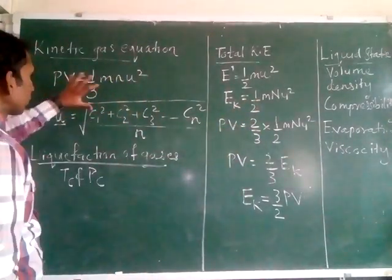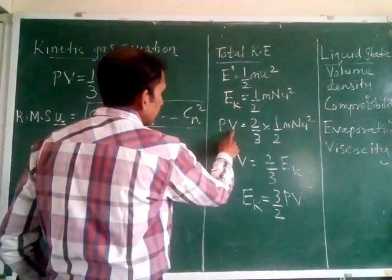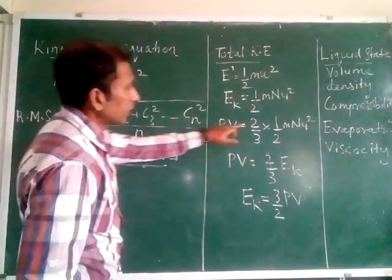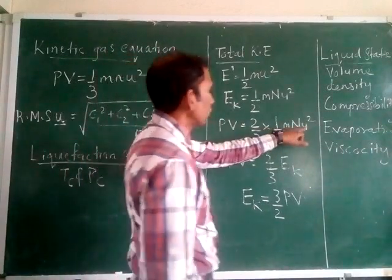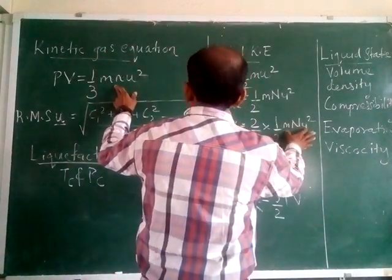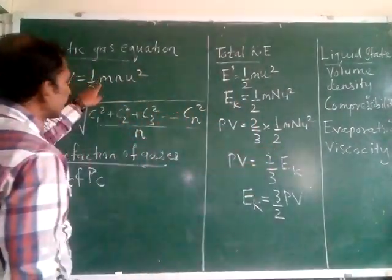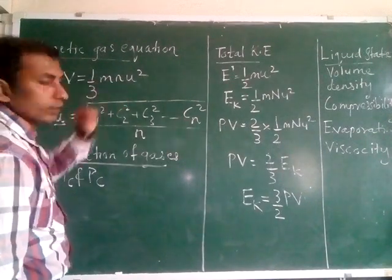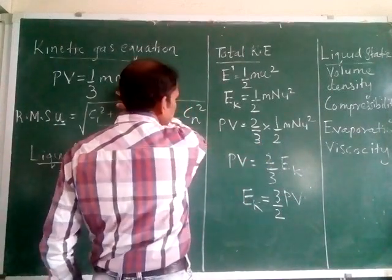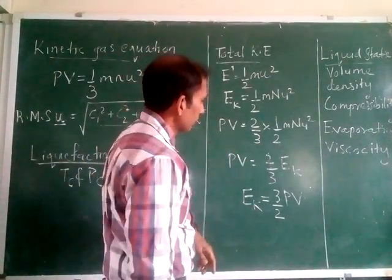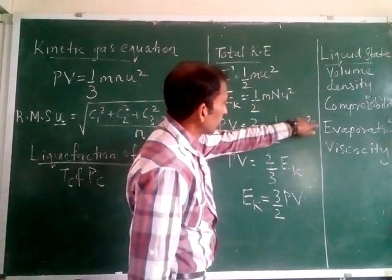Now let us try to fix this equation without changing its value. PV equals—we multiply by 2 by 3, multiplied by half m N u square. Now 2 gets cancelled and we will get the same equation, 1 by 3 m N u square. That's why we are multiplying with this factor so the equation should not change.